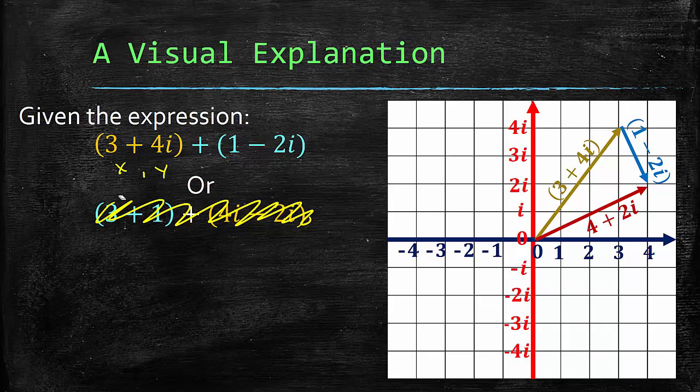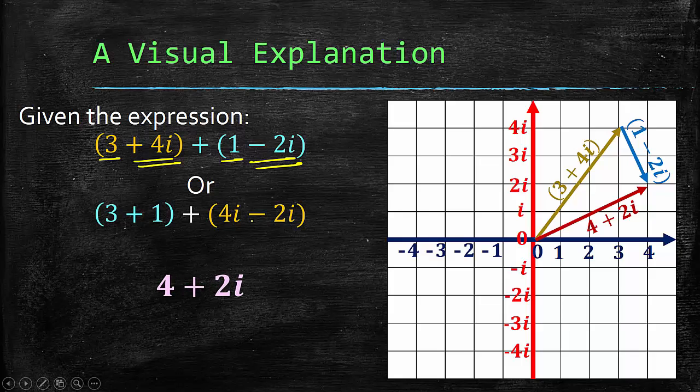That's just a visual representation. This is a more traditional way of doing it. I would suggest grouping your numbers - you have your constants and then you have your imaginary numbers. Don't forget the sign to the left of it. Put them together. 3 plus 1 is 4. 4i minus 2i is just 2i.